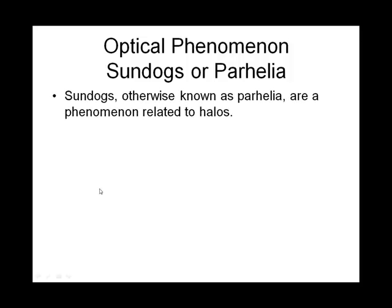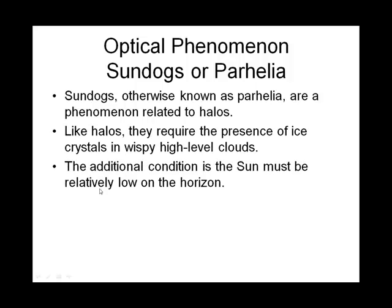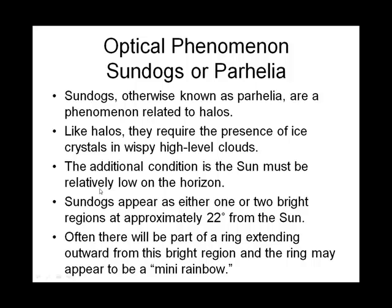Another cool thing you might see in the atmosphere is something called a sun dog. Like a halo, sun dogs also need ice crystals. You have a homework question that asks what they look like, what causes them, and what time of day — are there any constraints? Sun dogs are kind of like rainbows in that you only see them when the sun is relatively low on the horizon, meaning sunrise or sunset. And you need these wispy cirrostratus or cirrus clouds with ice crystals.